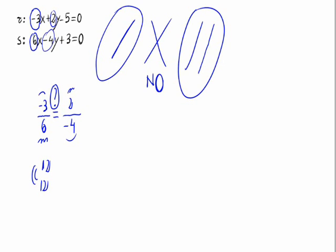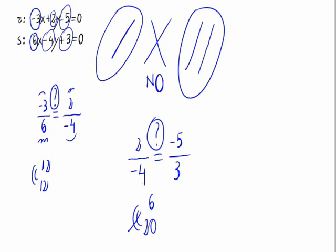To know if they are coincident or parallel, we compare the coefficient ratio to the independent term ratio. -5 divided by 3... 2 times 3 is 6, and -4 times -5 is 20. As we can see, it is different. This means the straight lines are parallel.